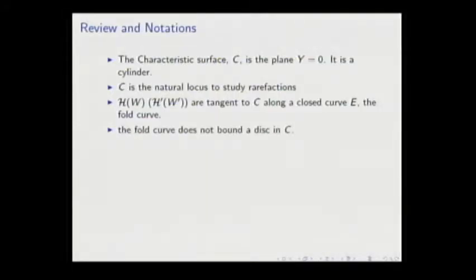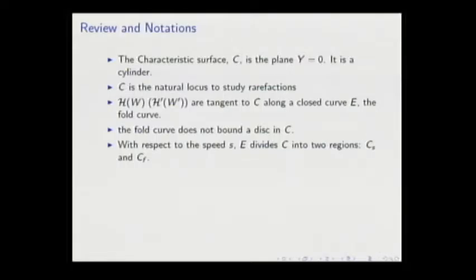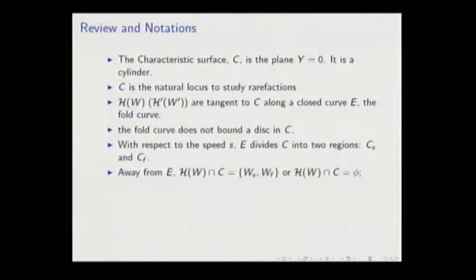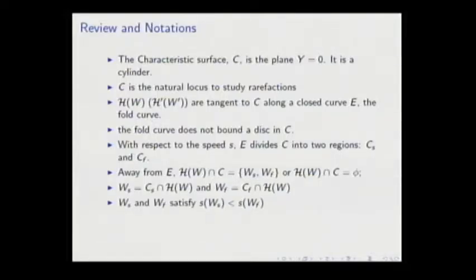The fold curve E does not bound a disk in C. With respect to speed S, this closed curve divides C into two regions, Cs and Cf. Cs is the fast characteristic. Away from E, the intersection of the Hugoniot curve with C gives two points, Ws and Wf. We call Ws the slow characteristic because the intersection has the property that the characteristic speed at Ws is less than that at Wf.